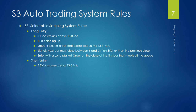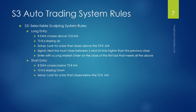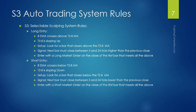The short entry is basically the opposite. The 8 EMA crosses below the T3-8 MA, and the T3-8 is sloping down. We look for a bar that closes below the T3-8. The signal is that the next bar must close between 5 and 24 ticks lower than the previous close. We enter with a short market order on the close of the first bar that meets all of the above.